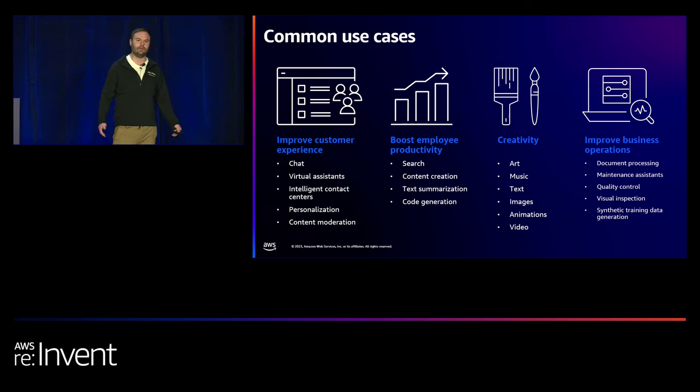For employee productivity, we often have tons of wikis and internal documents but spend enormous time figuring out where that information resides. We're seeing advances in generative AI for intelligent search and question-and-answer capabilities, getting information quickly to decision makers. We're also seeing content creation — not just text and text summarization, but compelling narratives, images, audio, visual content, and code generation — all drastically improving the developer experience.